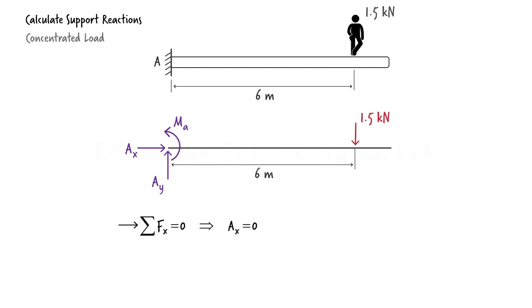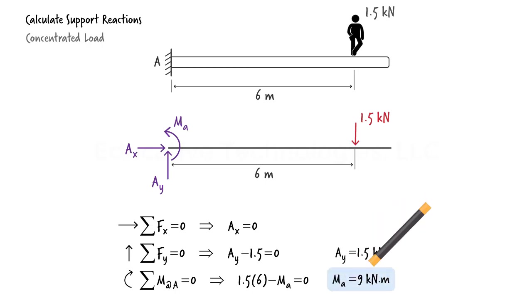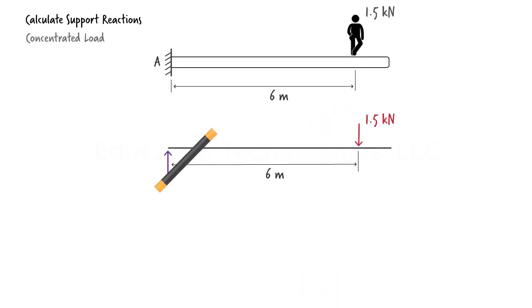Here is the free body diagram for the beam. And here are the three equilibrium equations. Solving them for the unknown forces we get, there is an upward reaction force of 1.5 kN and a counterclockwise moment of 9 kN meters at the fixed support.